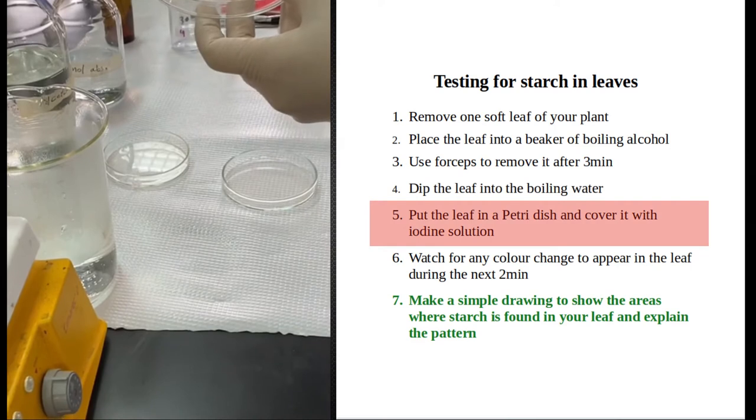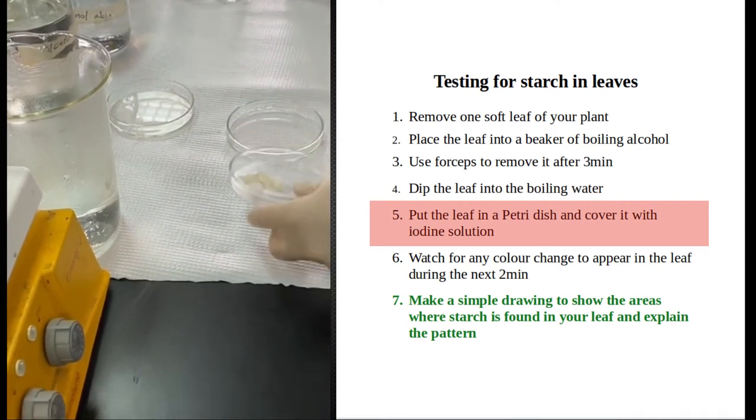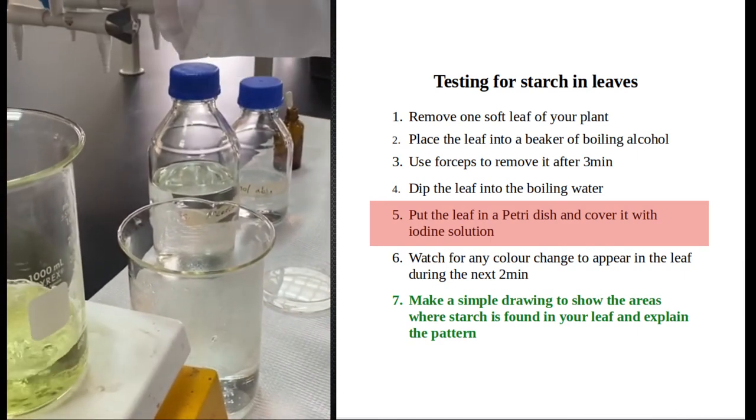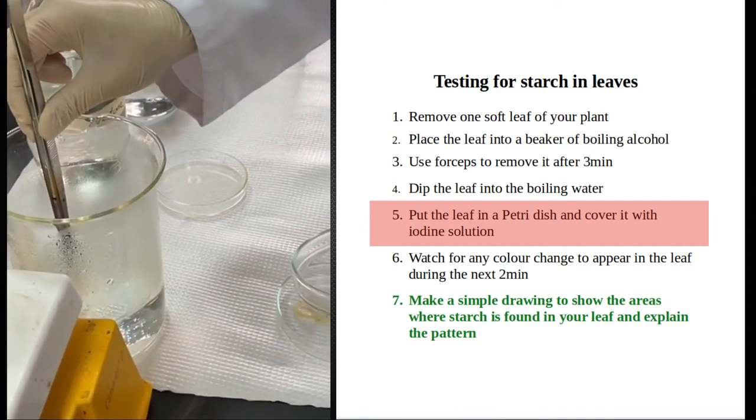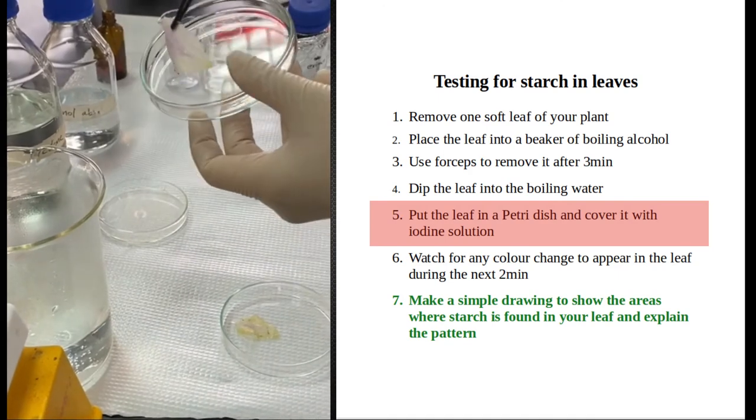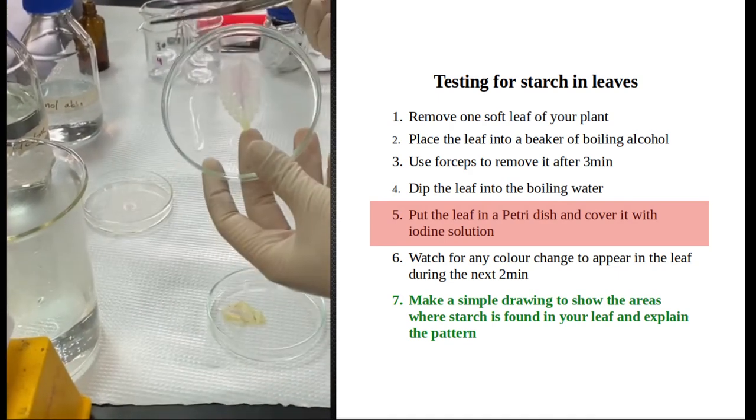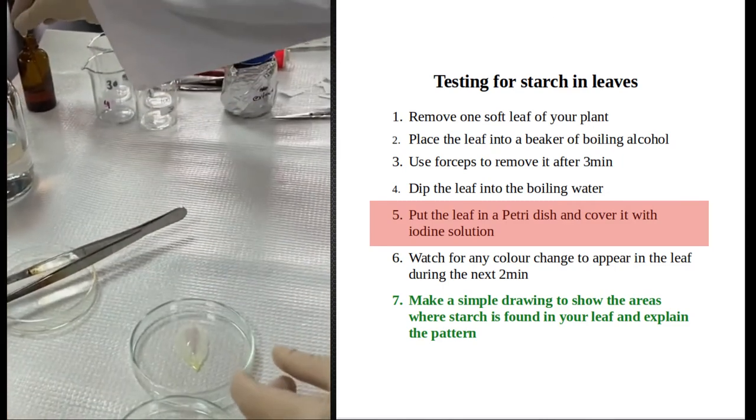This is leaf number one and this is the second leaf. As you can see, the leaf has lost its pigmentation - it's white now. The green chlorophyll is totally gone and even the purple. I will cover it with iodine to see what's going to happen.